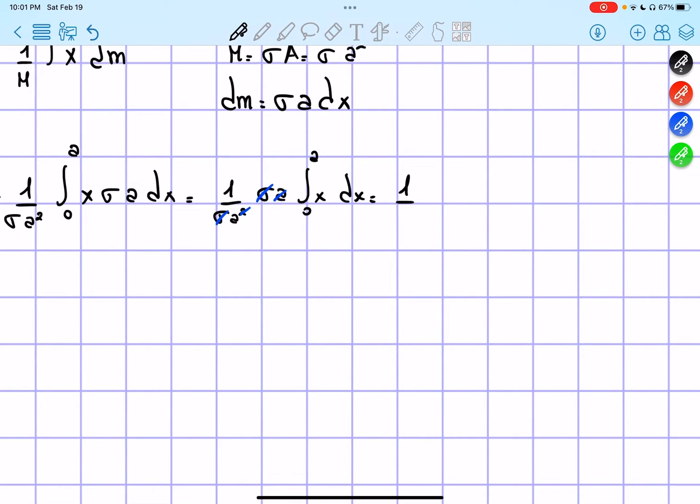So we're going to have 1 over a times, and integration of this will be equals to 1 half x squared from zero to a, so we're going to have 1 over 2a times a squared. So, we can just simplify this, we're going to get 1 half a, and that's the x-coordinate of our center mass.